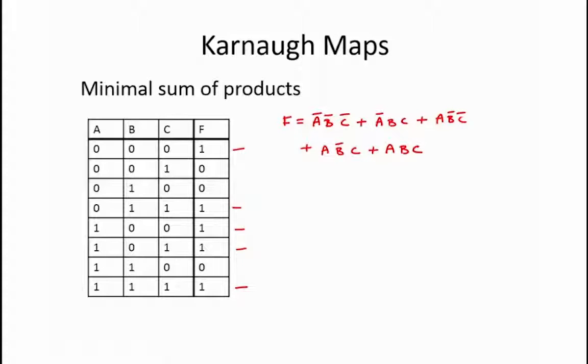We then create the Karnaugh Map for the function by making a 2D grid representing all possible input combinations and ensuring that from one column or row to the next in the grid, only one single input can be changed. This is known as gray code.